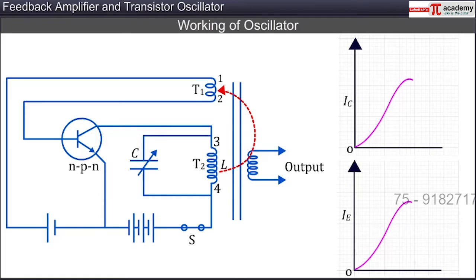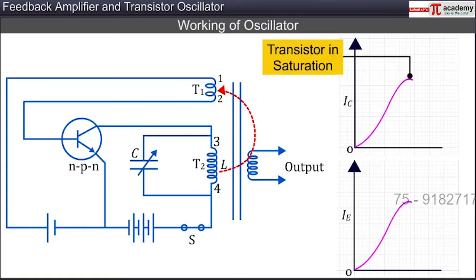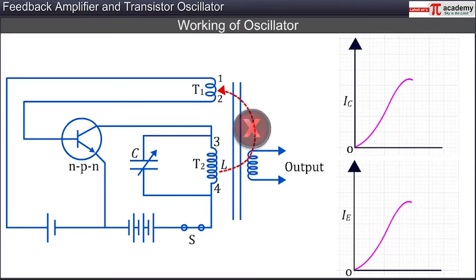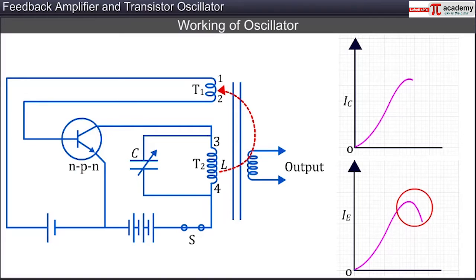When the inductor current reaches the peak or becomes maximum, it stops rising further and the transistor goes into the saturation state. When the transistor goes into the saturation state, the current stops changing in coil T2 and therefore inductance or feedback from coil T2 to coil T1 stops. When the feedback stops, emitter current starts decreasing. As the emitter current decreases, the collector current also starts decreasing.